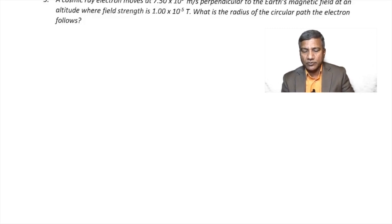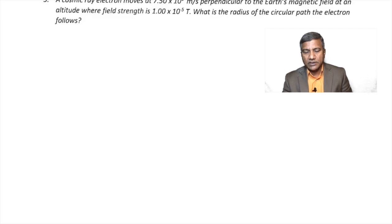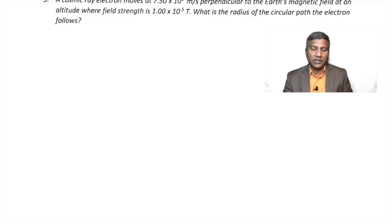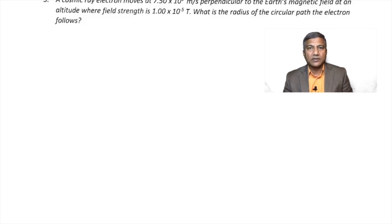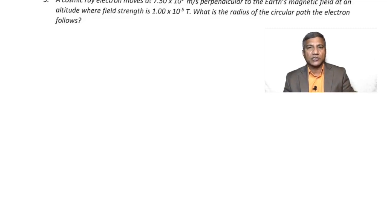Question 3: A cosmic ray electron moves at 7.50 × 10⁶ m/s perpendicular to the Earth's magnetic field at an altitude where the field strength is 1.00 × 10⁻⁵ Tesla. What is the radius of the circular path the electron follows? When a charged particle enters a magnetic field at right angles, it is compelled to move in a circular path, and centripetal force must act on it — provided here by the magnetic force.